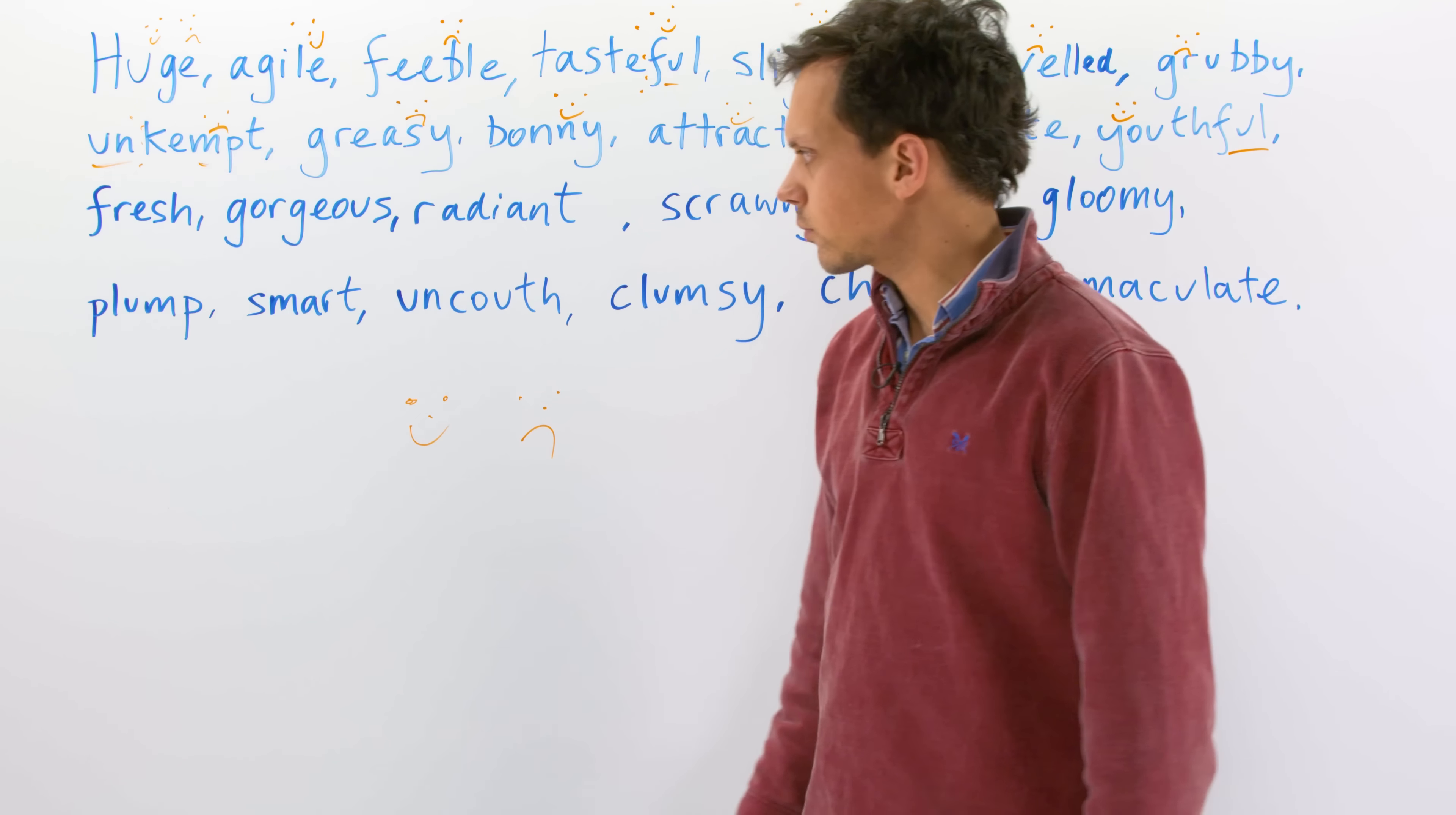Clumsy. Clumsy is when you sort of knock things over, shoelaces undone. Clumsy. Quite the opposite of... Can you spot the word? It's the opposite of in the top row somewhere over here. The opposite of agile.